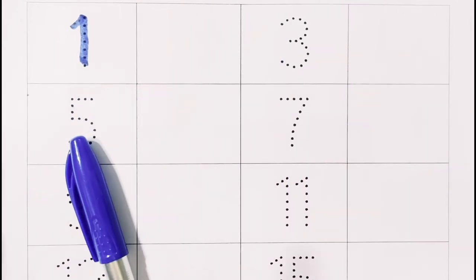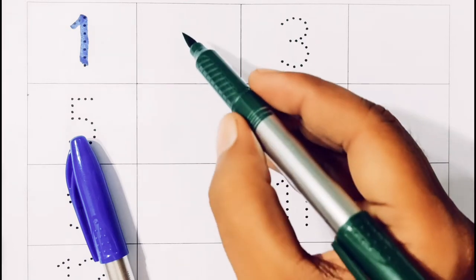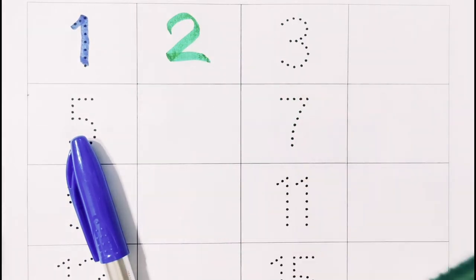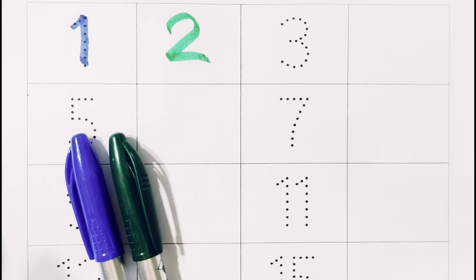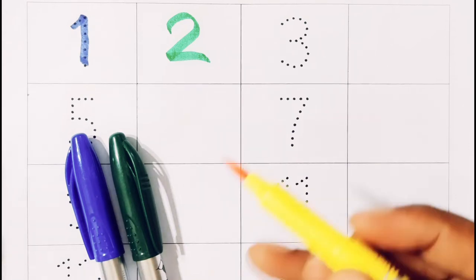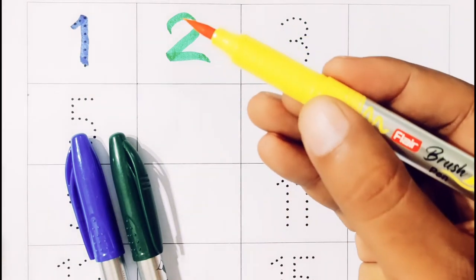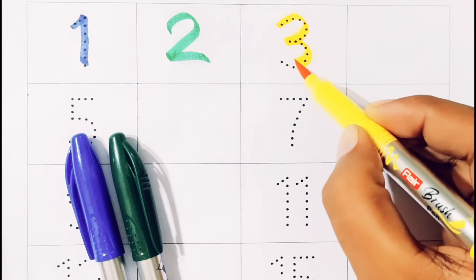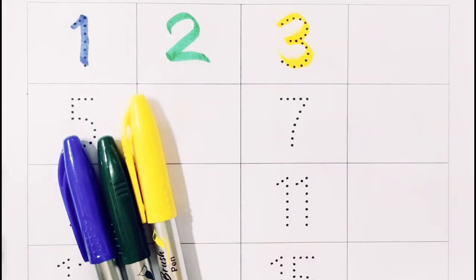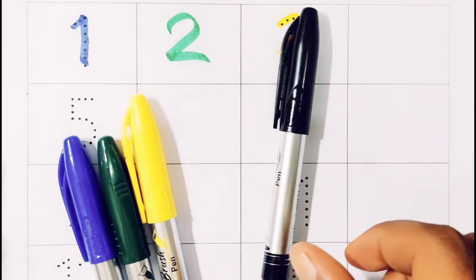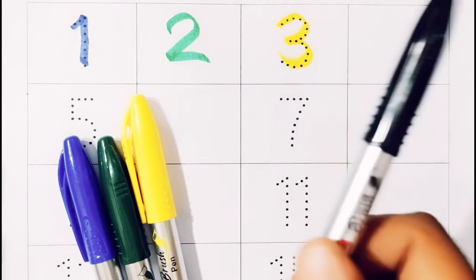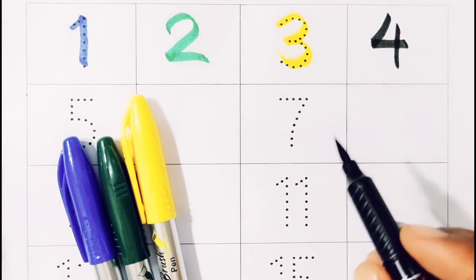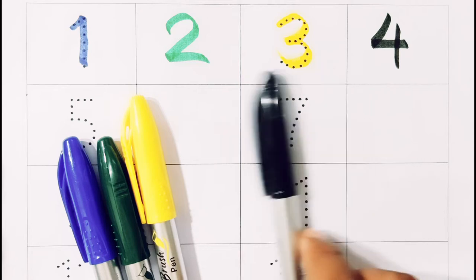One! One के बाद आता है टू! Two! Two के बाद आता है? थ्री! Three से लिखेंगे Yellow color से! Three! Three के बाद लिखेंगे Black color से Four! Three के बाद आता है? Four!